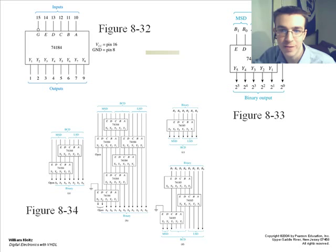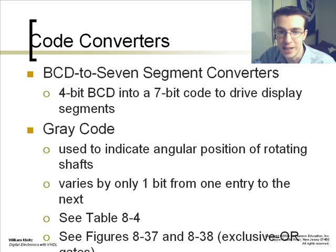These are examples of code converters. Your 74184 chip used to convert from BCD to binary. You have a BCD to 7-segment converter as well. It's a 4-bit BCD into a 7-bit code to drive display segments.